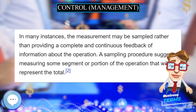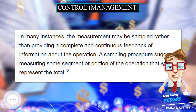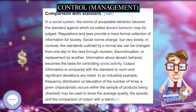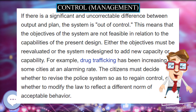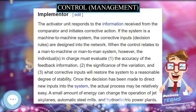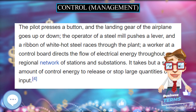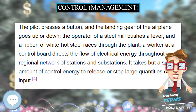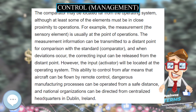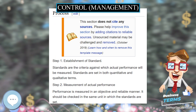In an industrial example, frequency distribution — a tabulation of the number of times a given characteristic occurs within the sample of products being checked — may be used to show the average quality, the spread, and the comparison of output with a standard. If there is a significant and uncorrectable difference between output and plan, the system is out of control. This means that the objectives of the system are not feasible in relation to the capabilities of the present design. Either the objectives must be re-evaluated or the system redesigned to add new capacity or capability.